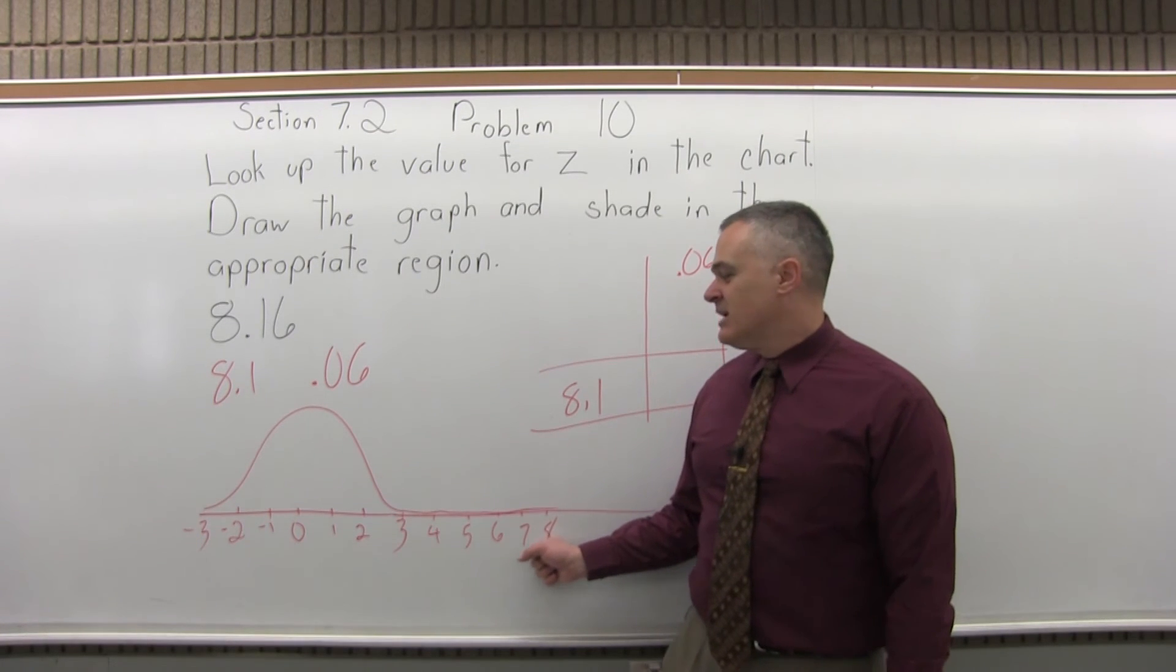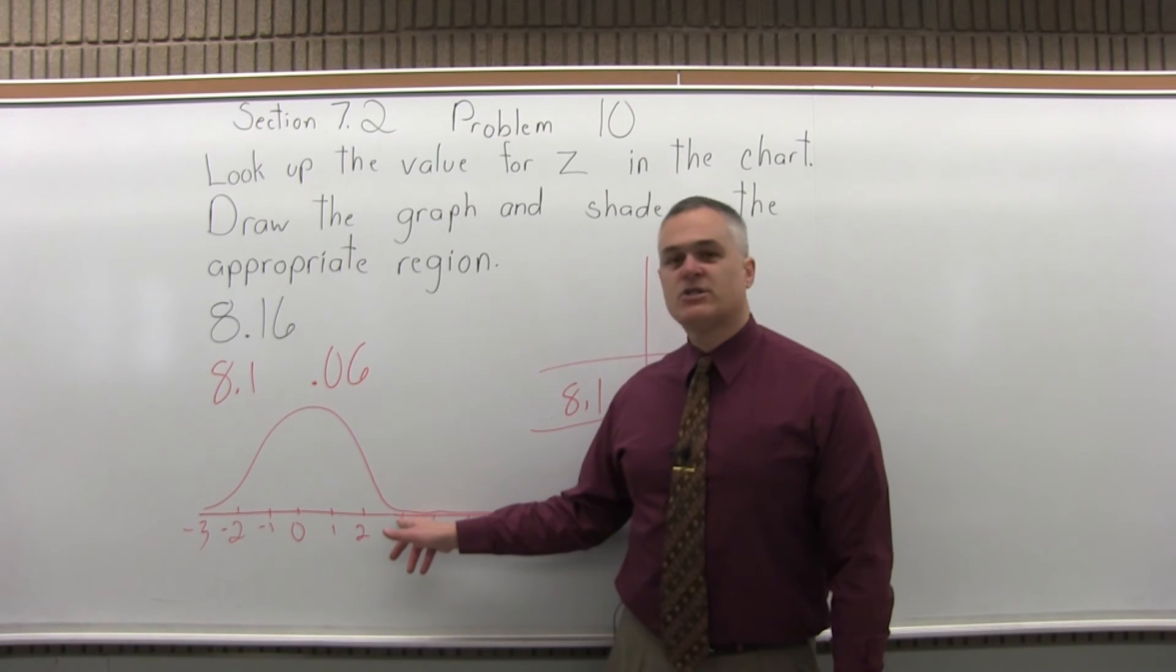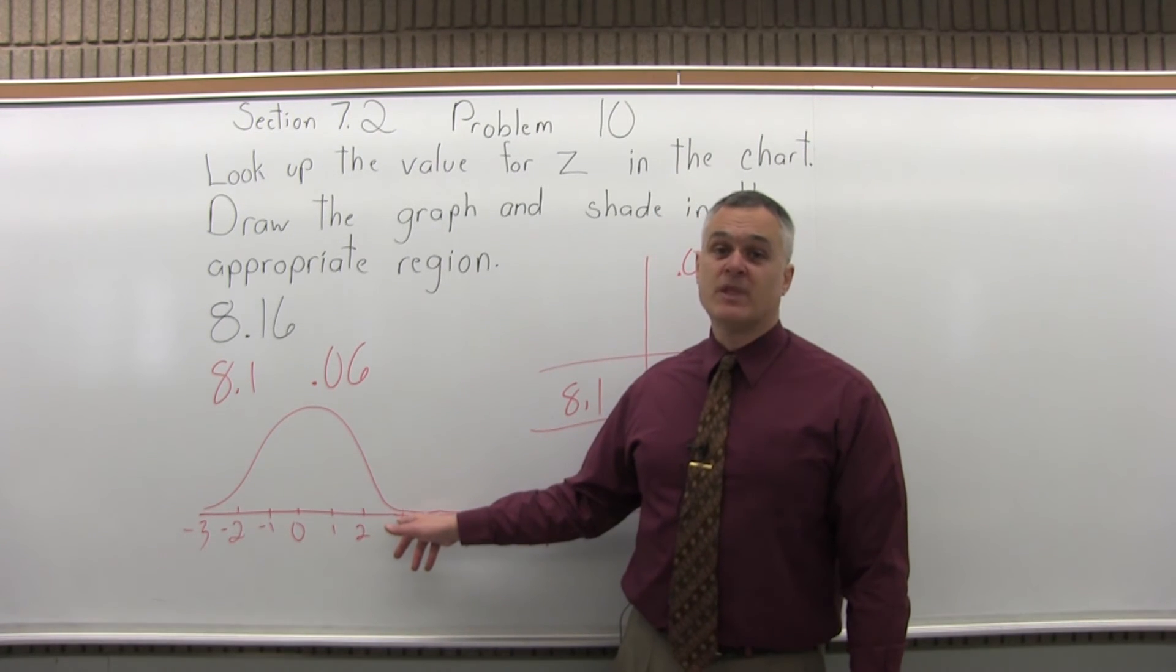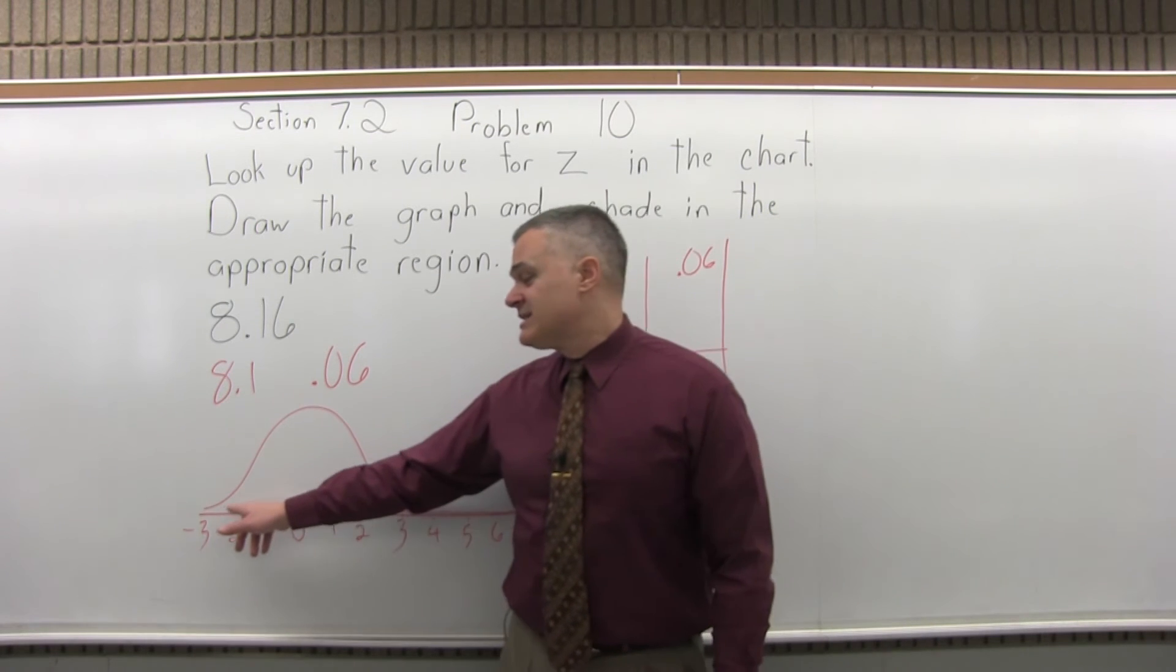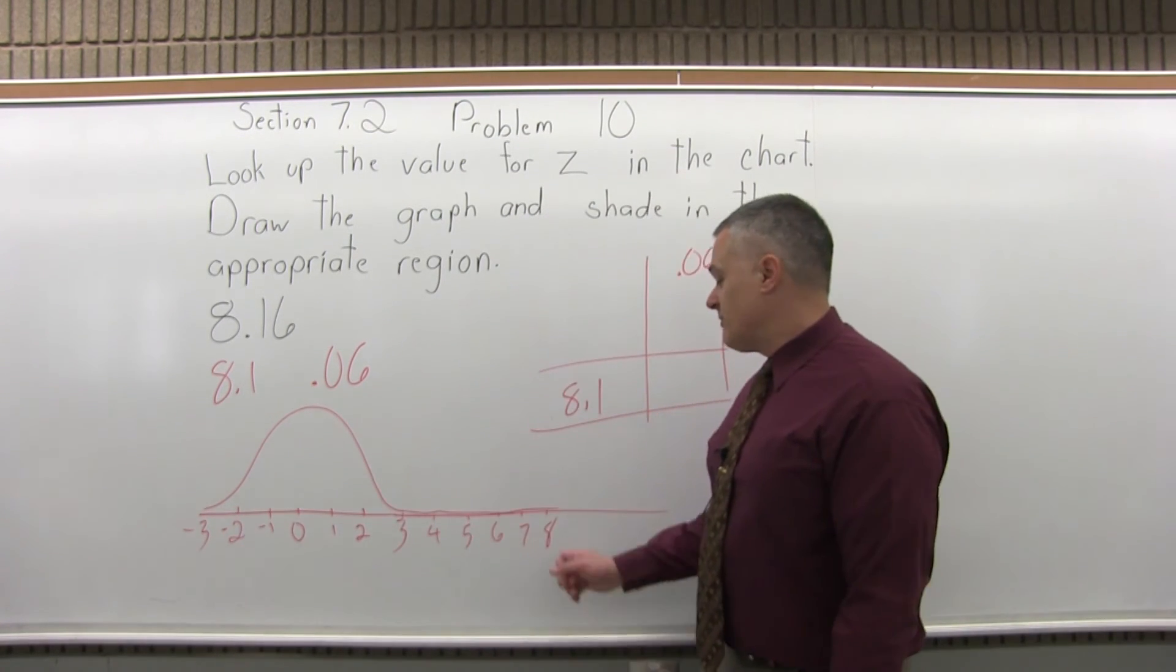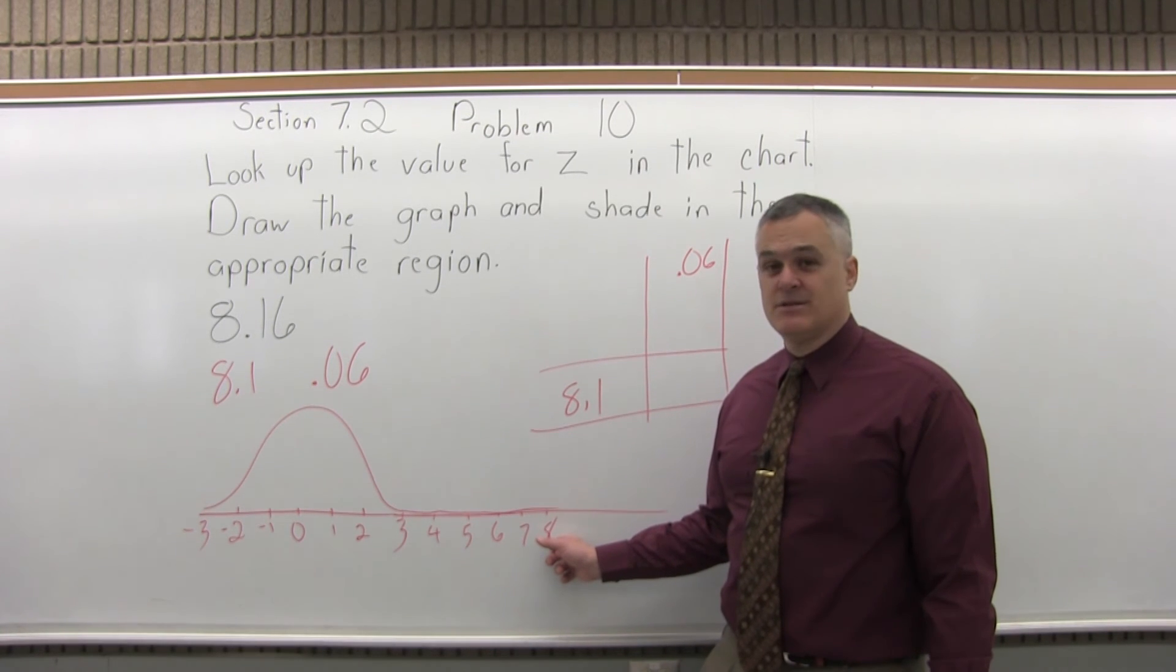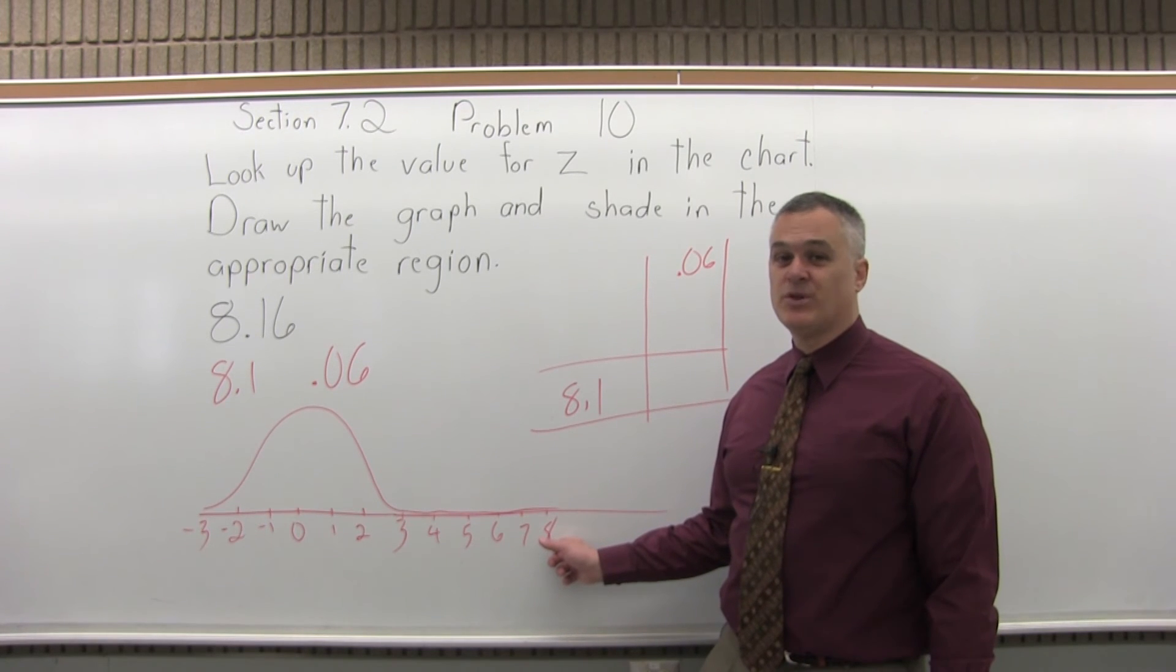In the notes it will say for values larger than 3.49, assume the answer is 1. And for values less than negative 3.49, assume the answer is 0. Being 8 standard deviations larger than the average value is like having a woman that's 7 foot 5. Can this happen? Yes. It's super rare. Of the 7 billion or so people in the world, there's one or two women that have gotten to be that tall.